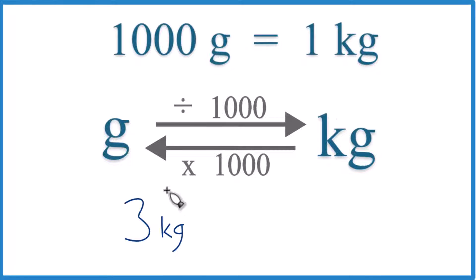So here's how you can convert 3 kilograms to grams. The first thing you need to know, 1,000 grams, that equals 1 kilogram.